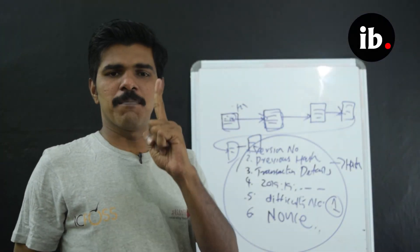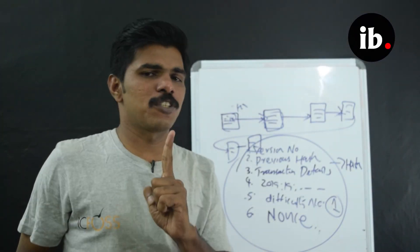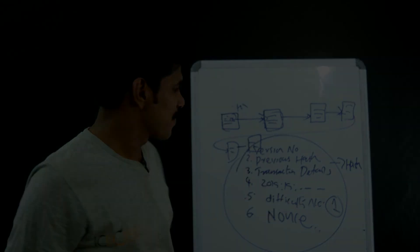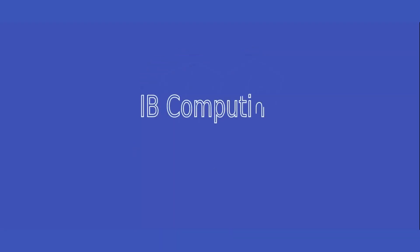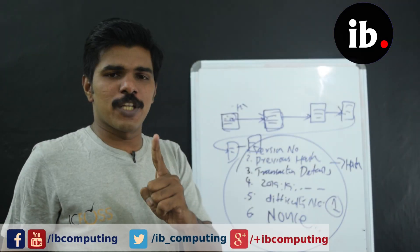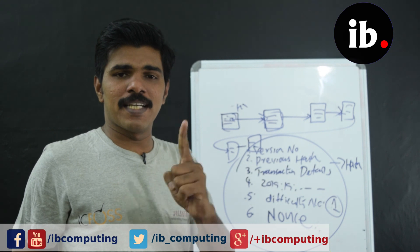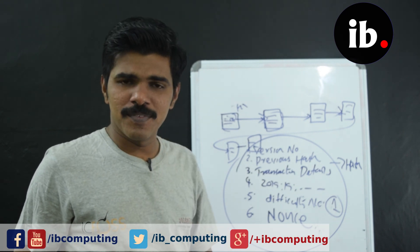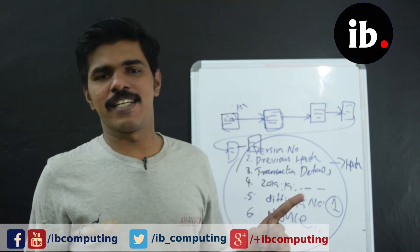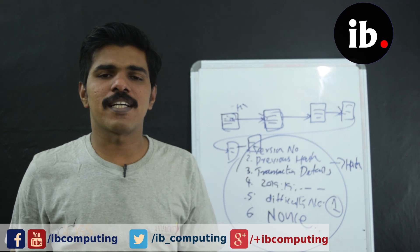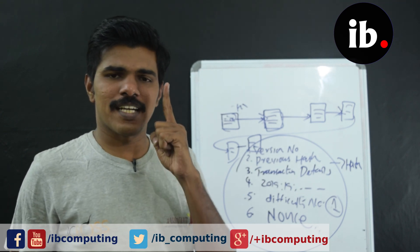Now, let's talk about Bitcoin Mining today. What is the case of the blockchain? The case of a blockchain is the case of a block. This block is the case of a third party, which is a centralised community.